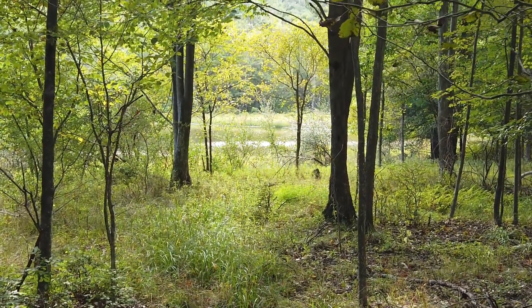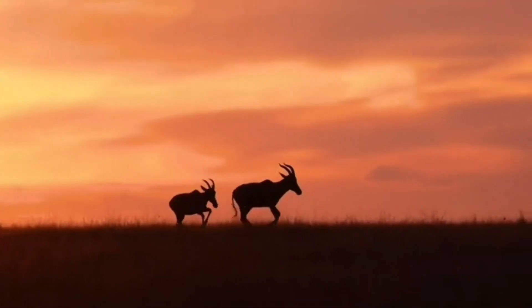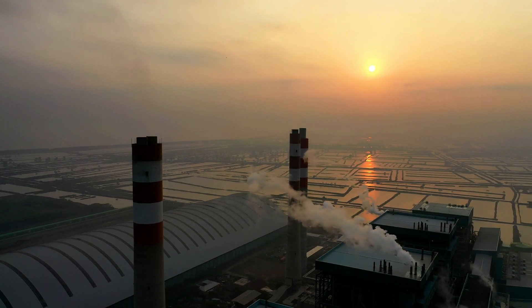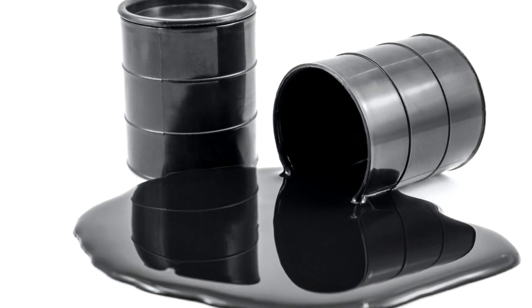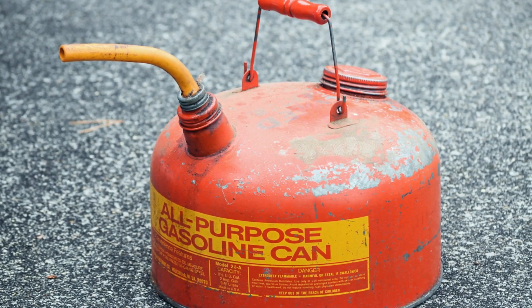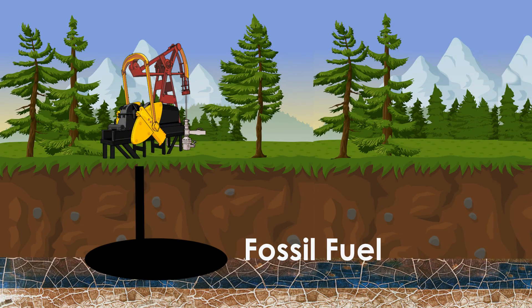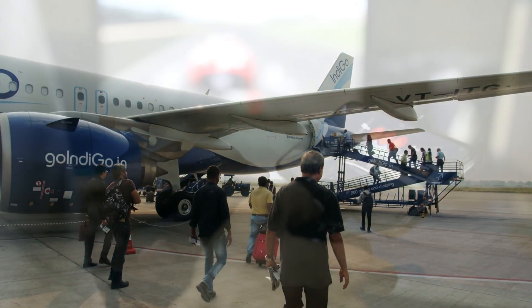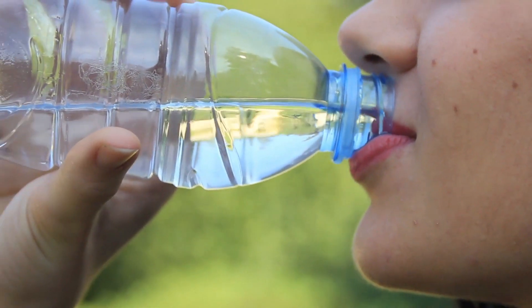Trees also help to cool the air, and without enough of them, the climate warms up. Other things people do, like using too much fossil fuel, also changes the climate. Fossil fuel is an example of a non-renewable resource. Fossil fuels are found underground. People use them as fuel for cars, buses, and airplanes, for electricity, and to make things like plastic bottles and bags.